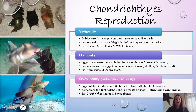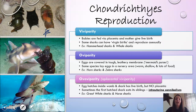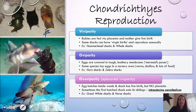Next we have oviparity. In oviparity, the eggs are covered in a tough membrane and are typically referred to as mermaid purses. You can see examples of what they look like at the top. Some of these sharks go a step further and actually have nursery areas where they lay these mermaid purses, so that when the babies hatch, they have lots of opportunity to survive. Examples here are horn sharks and zebra sharks.